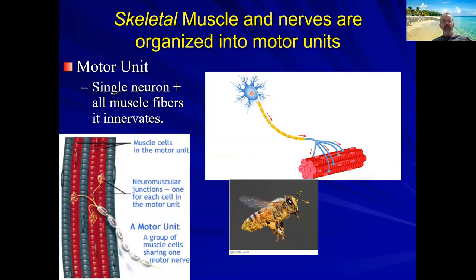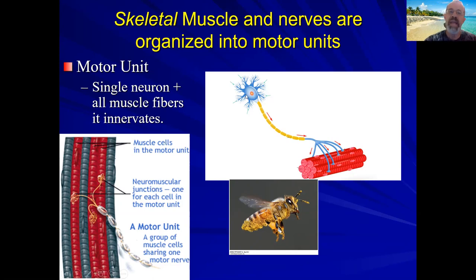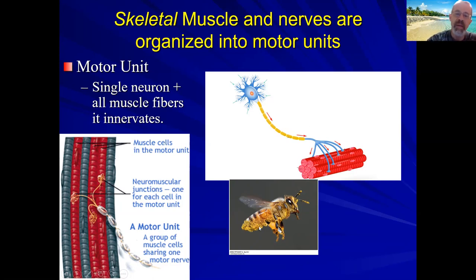Some terms to become familiar with regarding the relationship between skeletal muscle and nerves: a motor unit by definition consists of a single neuron and all the different muscle fibers it innervates. You might think it's a one-to-one relationship, but most neurons have several different axon terminals. In the diagram shown, one axon has five terminals innervating five muscle fibers — that entire interaction is one motor unit. Another motor unit shown has a myelinated axon innervating three muscle fibers.